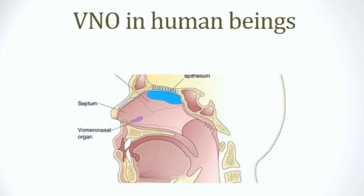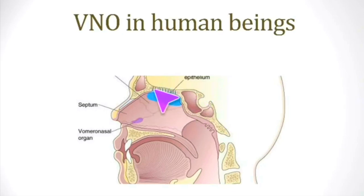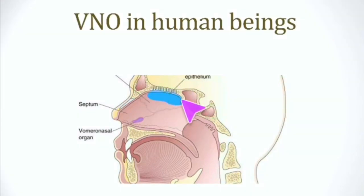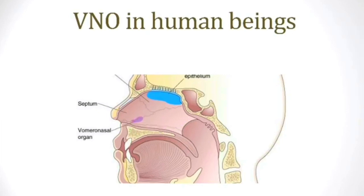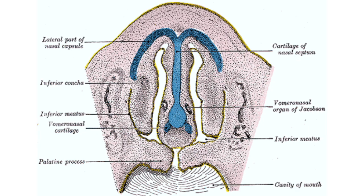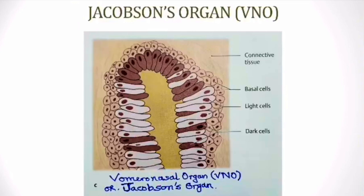The vomeronasal organ in human beings — unlike the olfactory epithelium, which occupies the upper one-third of the nasal chamber or the roof of the nasal cavity under the surface of the cribriform plate — is present anterior-inferiorly on the two sides of the nasal septum. It is located at the junction of the vomer and the septal cartilage. It is very small, a patch of specialized epithelial cells forming a tubular, crescent-shaped gland.